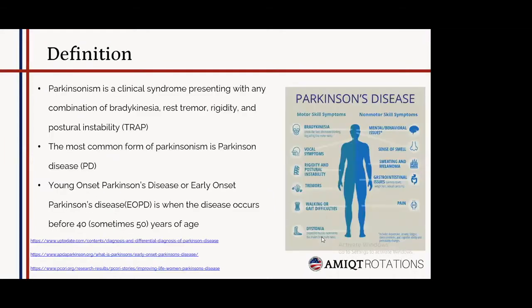To define what Parkinsonism is: Parkinsonism is a clinical syndrome presenting with any combination of bradykinesia, rest tremor, rigidity, and postural instability. The most common form of Parkinsonism is Parkinson's disease, also called idiopathic Parkinsonism. Young onset or early onset Parkinson's disease is a variant where the disease occurs before 40 — sometimes 50 — years of age. There is varying literature on the exact cutoff, but many studies agree that it is before 40.